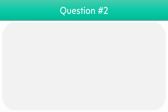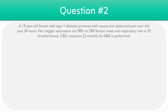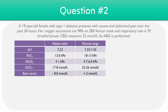Let's now take a look at the second question, which involves a 19-year-old female with type 1 diabetes who presents with nausea and abdominal pain over the past 24 hours. Her oxygen saturations are 98% on a 28% Venturi mask, and her respiratory rate is 29 breaths per minute. We also have a point-of-care glucose test which measures 22 millimoles per litre, and we have our second ABG result here.